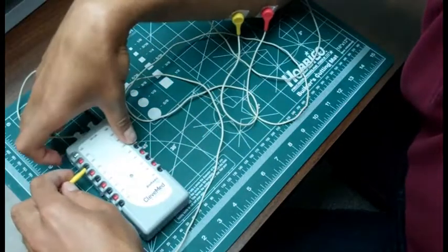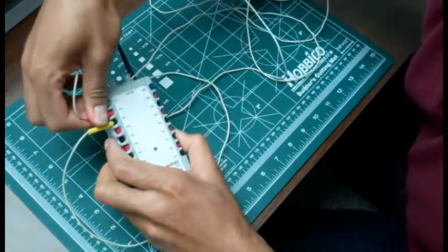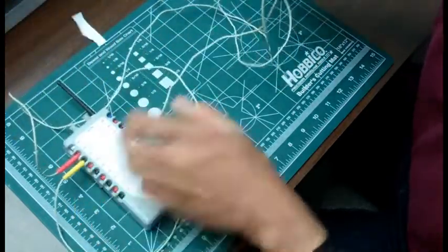We will then connect the forearm electrode cables to channel one on the bioradio and then connect the elbow electrode cable to ground.